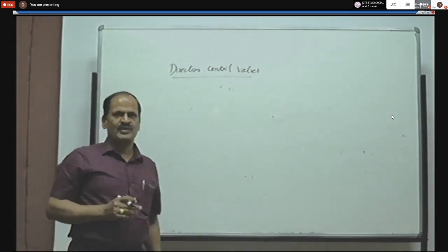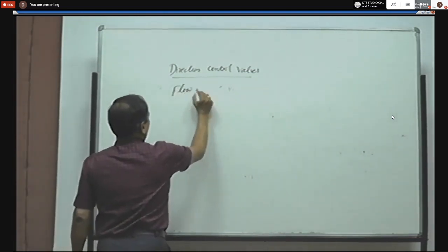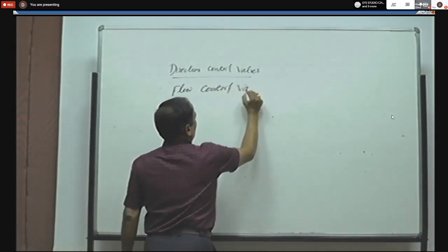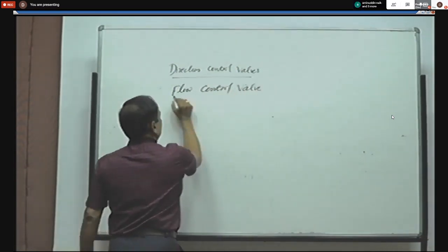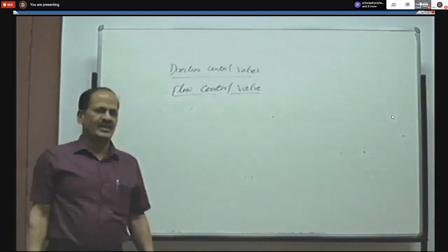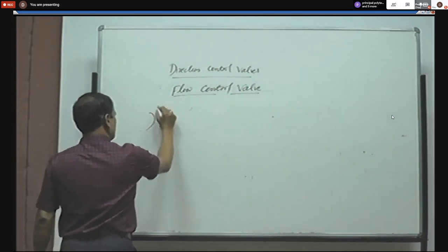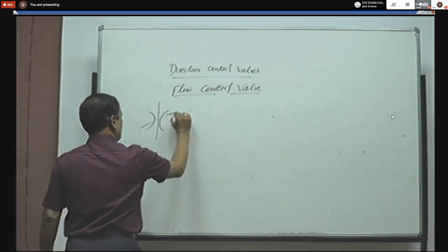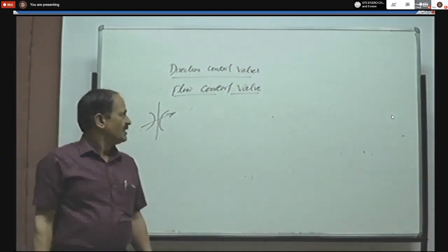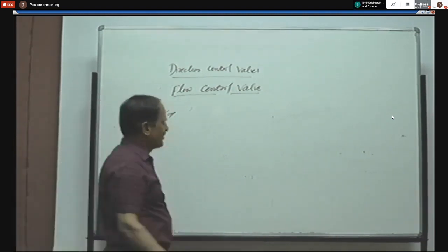Another type of control valve used in the hydraulic system is the flow control valve. We will discuss the symbol for representing a flow control valve and the necessity of using a flow control valve in the hydraulic circuit.